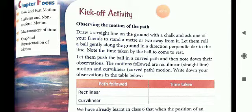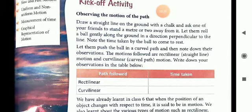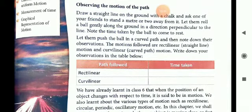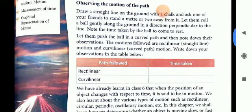That means your friend should stand 1 meter or 2 meters away from it. And then let them roll a ball gently along the ground in a perpendicular direction to the line. Note the time in a straight way the ball is rolled down and you have to note its time.